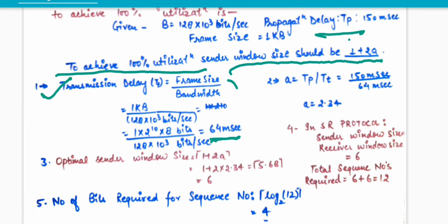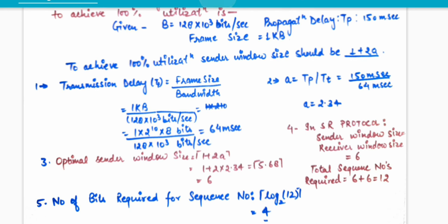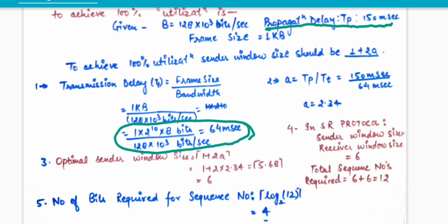So we got the transmission time. Propagation delay was already given in the question. Now in Step 2, we find 'a'. The value of a equals tp upon tt. Putting in the values, the value of a comes out to be 2.34.